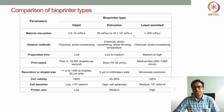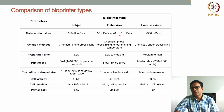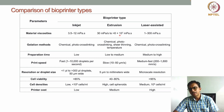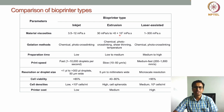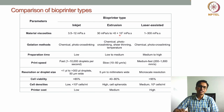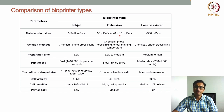Coming to extrusion-based bioprinting, we can use low to moderate viscous — even high viscous materials can also be used. A very wide range of viscous materials can be used, from very low to very high, because here the principle is we put the material into the syringe and apply pressure — either pneumatic or mechanical — for extruding the material. This is like 30 mPa·s to almost 10^7 mPa·s.